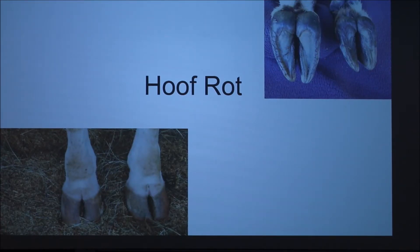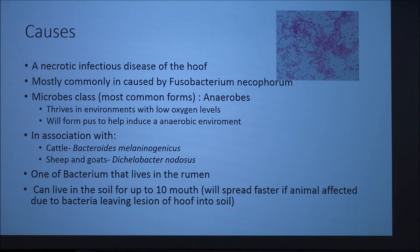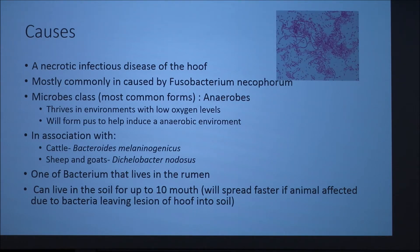My presentation today is over hoof rot. Hoof rot is an acutely infectious disease of the hoof. It is most commonly caused by Fusobacterium necroform, a microbe and an anaerobe, which means it thrives in low oxygen levels. The bacteria will actually make pus to help kill off all the oxygen and make the environment better for itself.